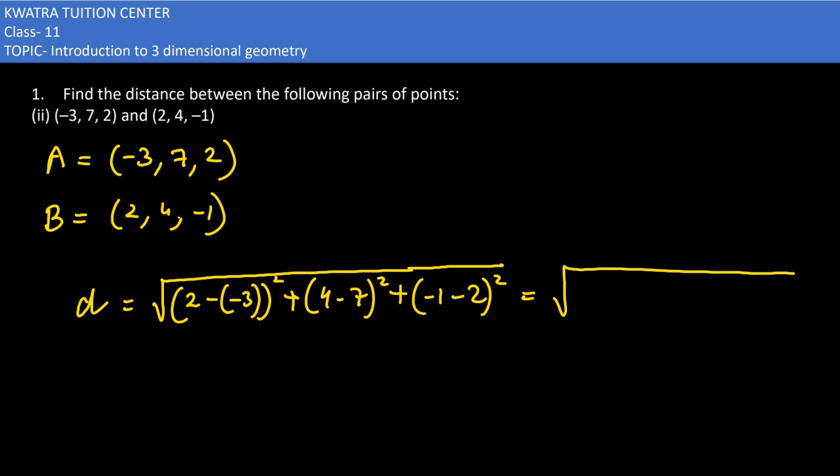Now here 2 minus minus 3 is nothing but plus. So 2 plus 3 ka square. Next we have 4 minus 7, so minus 3 ka square. Minus 1 minus 2 will be again minus 3 square.